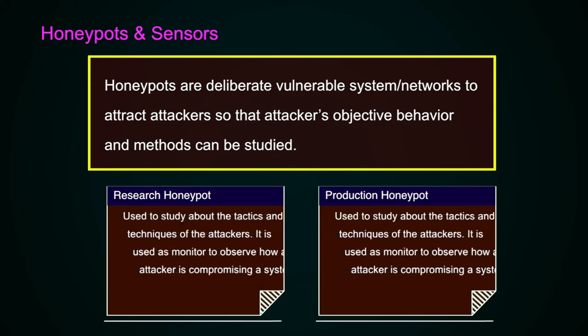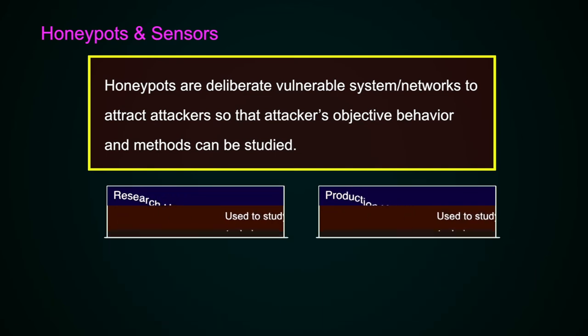There are two types of honeypots: the research honeypot and the production honeypot. A research honeypot is used to study the tactics and techniques of attackers — it is used as a monitor to observe how an attacker is compromising a system. A production honeypot is used for detection and to protect the organization by acting as a decoy system, luring attackers to it, wasting their time there, and thereby protecting the organization's main and critical assets.